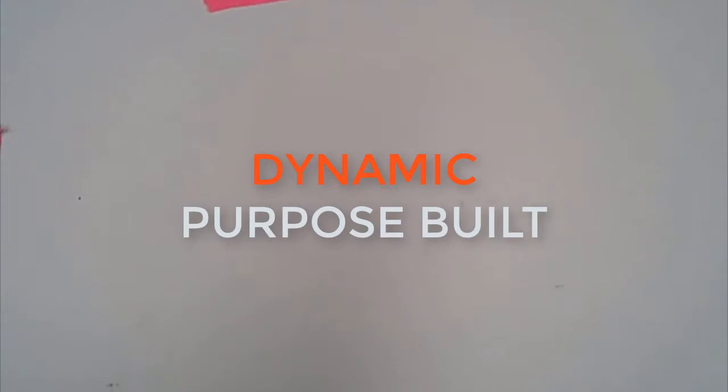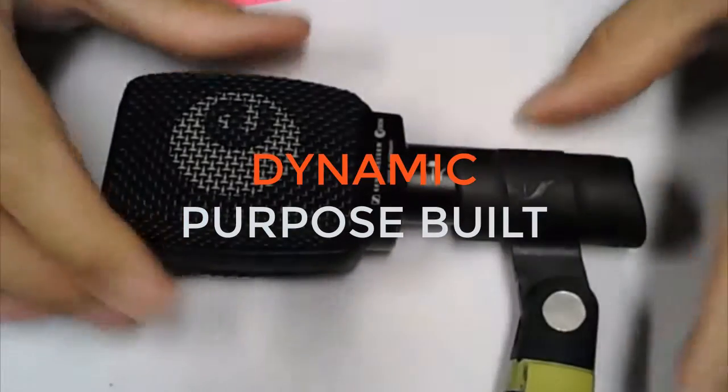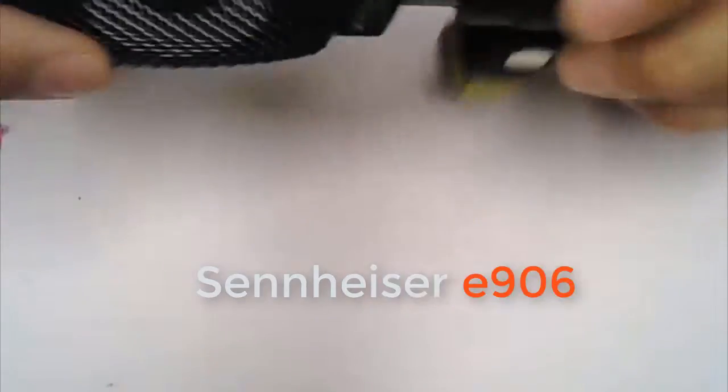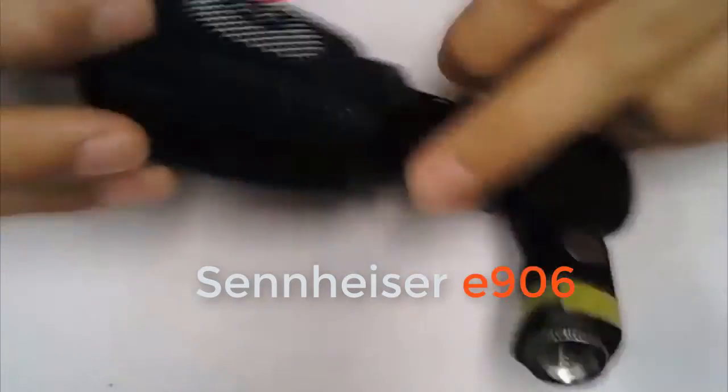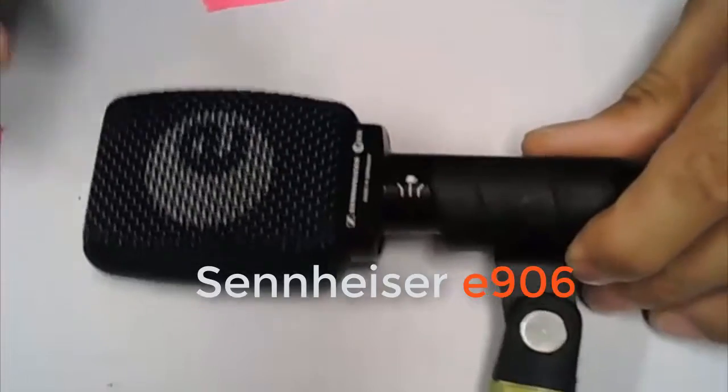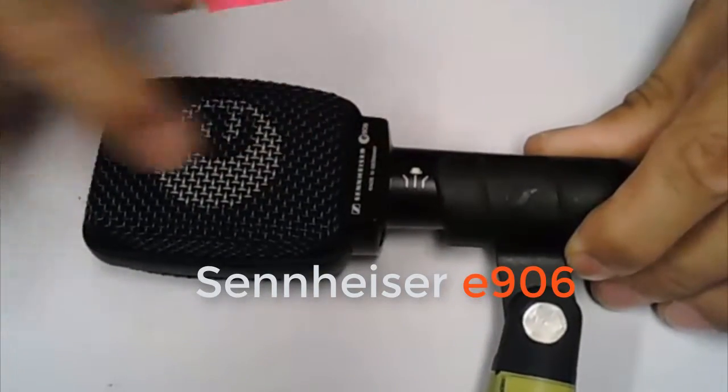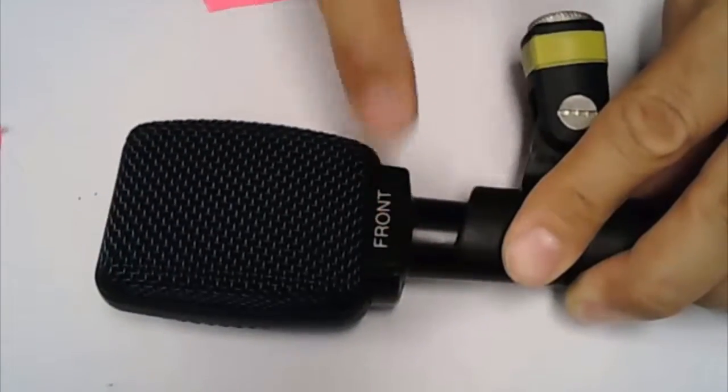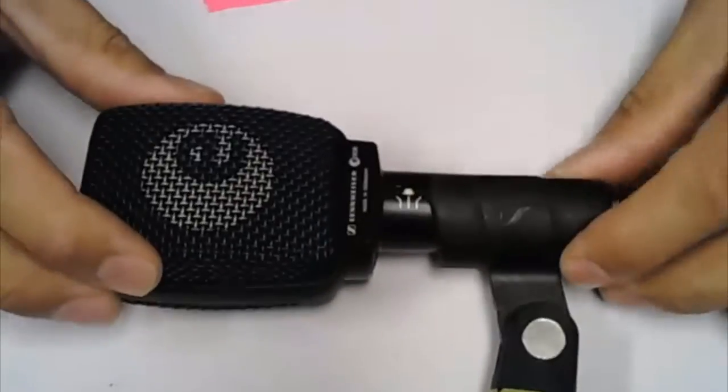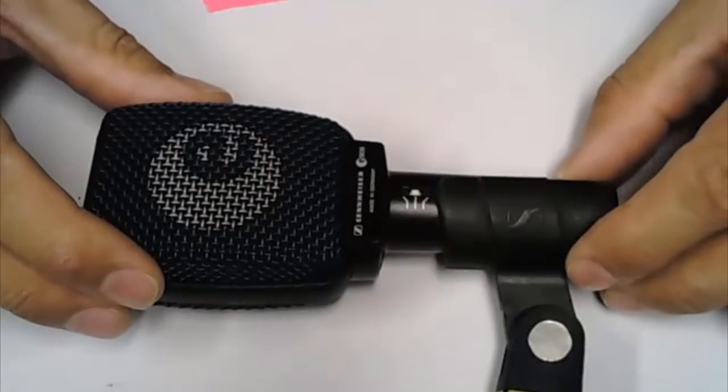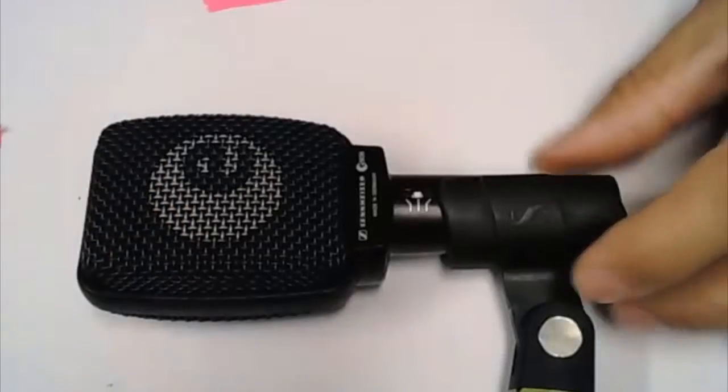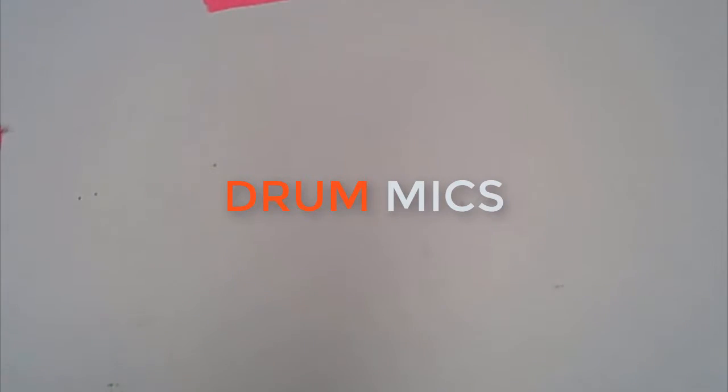So we're going to look at an instrument mic now. Specifically, this is designed for guitar cabs. This is a Sennheiser E906. People always ask which way they go. It's really simple. Companies like their logo on camera. This is the logo side. Face that towards the audience. This side that says front, point that towards the sound you're trying to pick up. Now, the 906 has a poor cousin called a 609. They sound very, very similar. This one's a little bit tougher.